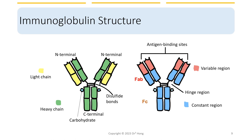We also have other ways to look at its structure. The handles of the Y shape we call a Fab fragment, and the straight vertical part of the antibody we call the Fc part. Another way to complete the whole picture: the tips of the antibodies are changing, but the rest in blue color are constant regions, so they don't change at all.